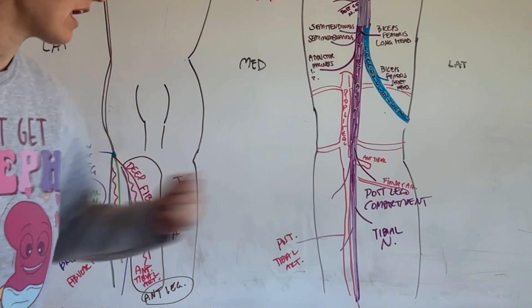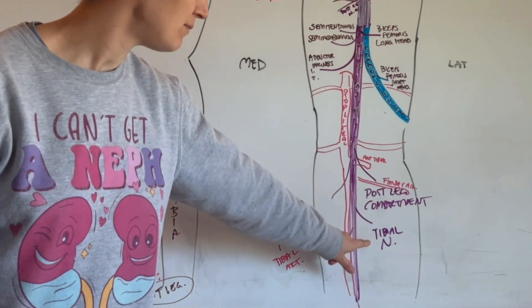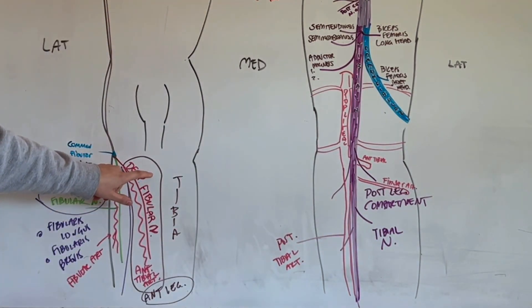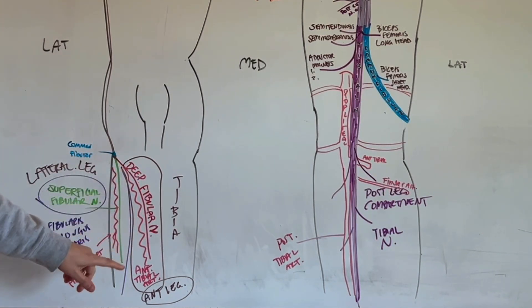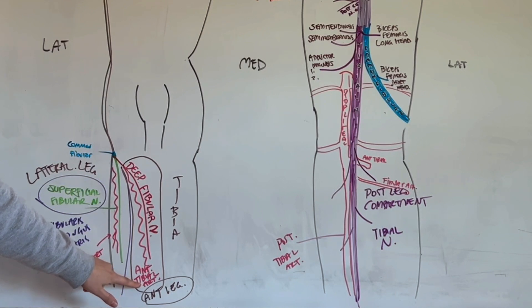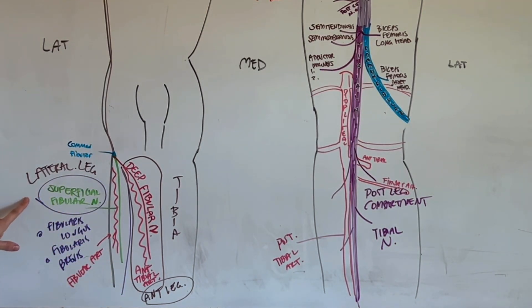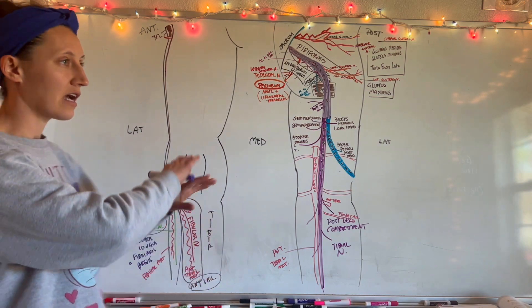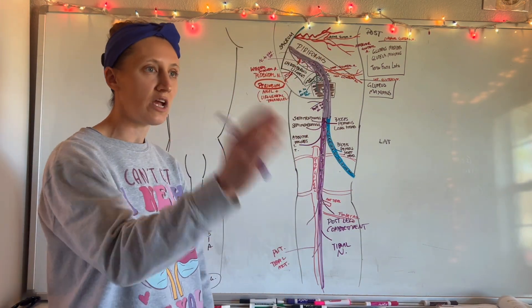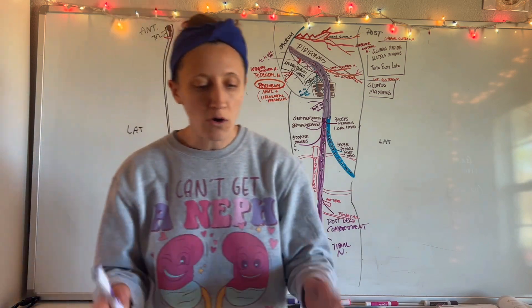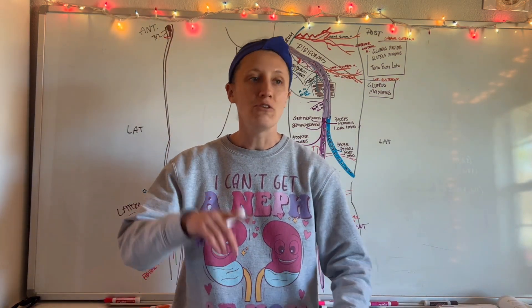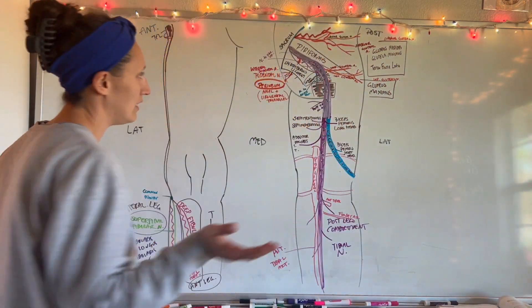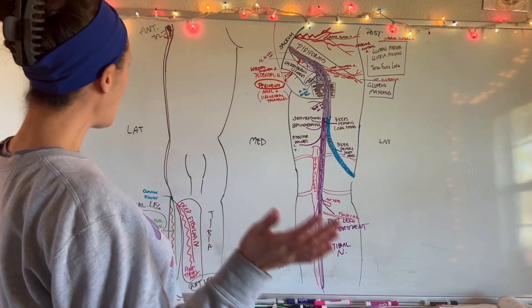Three leg compartments to remember: posterior leg — tibial nerve and posterior tibial artery; anterior leg — deep fibular nerve and anterior tibial artery; lateral leg — superficial fibular nerve and fibular artery. Write them out in circles so you know which nerves and arteries belong to each compartment. Then in lab, just orient yourself and you'll know what nerve you're looking at based on location. Separate videos will cover the lower leg, foot, and ankle in more detail.